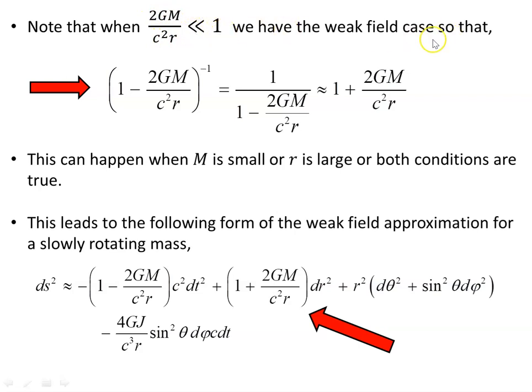In the Schwarzschild case, in the weak field where this is much less than 1, this object equal to this is then equal to 1 + 2GM/(c²r). I originally had minus here, but that would still be roughly equal.